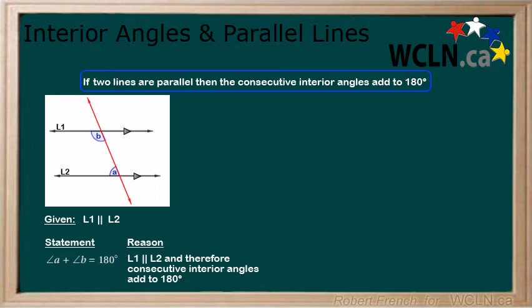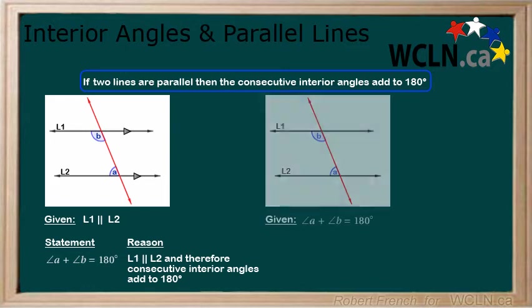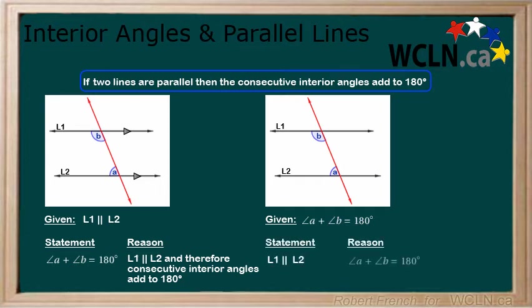Like the previous case, this goes the other direction as well. Here, we have two consecutive angles that add to 180 degrees. Therefore, we can state that the two lines are parallel, and the reason is that angle A plus angle B equals 180 degrees.